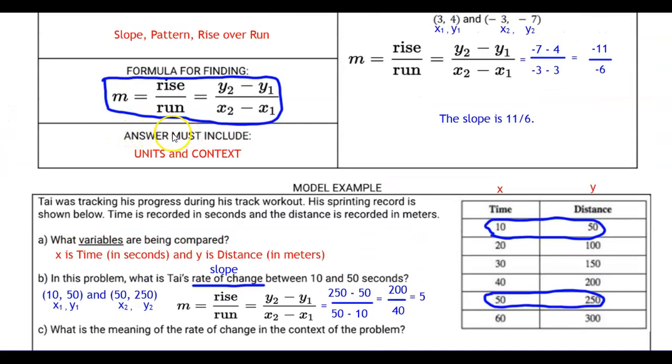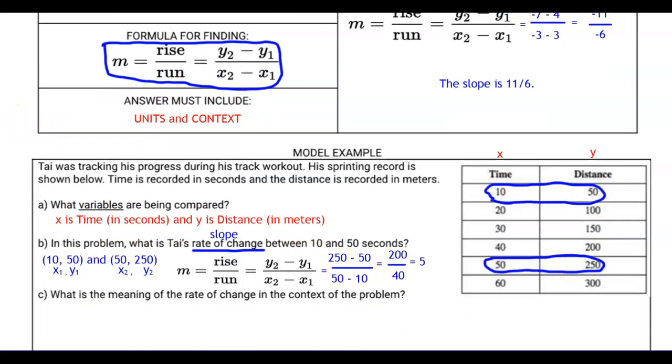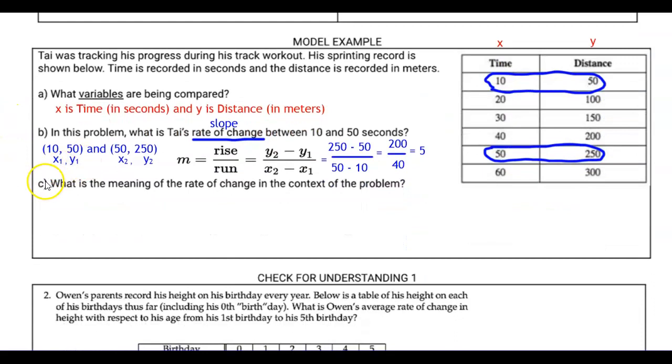Once we're done with finding the slope, we have to include units in context. So let's do some context. That's actually the question letter C here. What is the meaning of the rate of change in the context of the problem? Well, we know five is the number. Let's look at the units. Well, the units of time is seconds, and the units of distance is meters. So it's five y's every x. In other words, five meters every second. So I'm going to write down five meters per second. In other words, in the context of the problem, between 10 and 50 seconds, between 10 seconds and 50 seconds, Ty ran five meters per second.